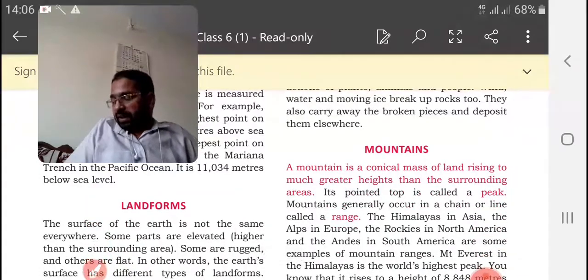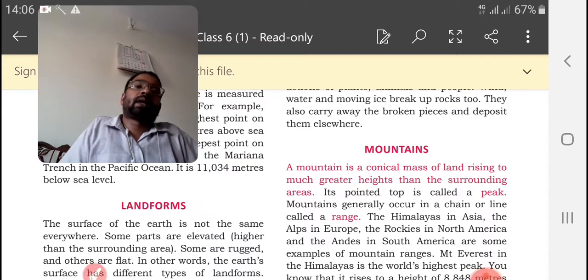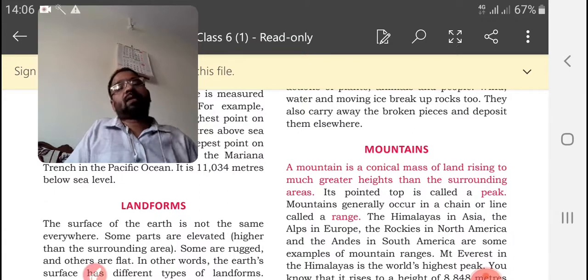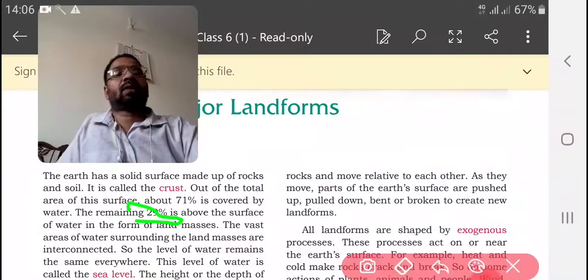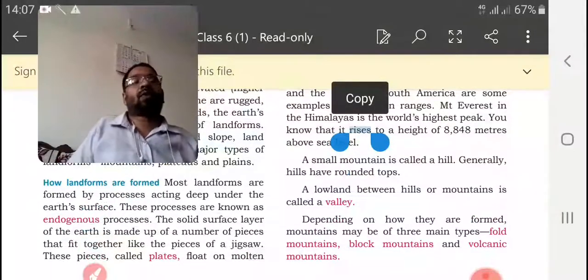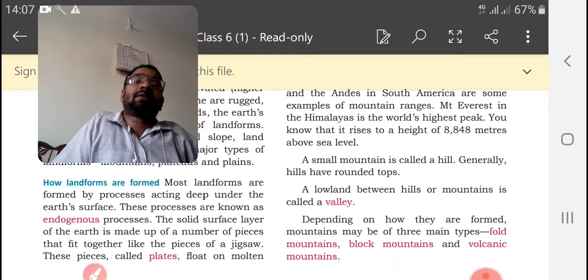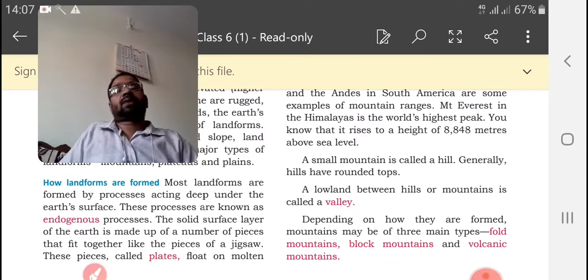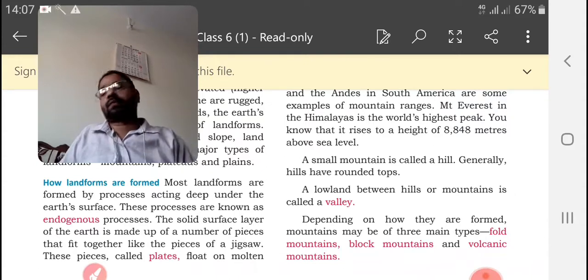Then landforms. The surface of the earth is not the same everywhere. Some parts are elevated higher than the surrounding area. Some of the parts are elevated from the surrounding area, this 29 percentage are known as landforms. How landforms are formed? Most landforms are formed by the process acting deep under the earth's surface. These processes are known as endogenous process. The action which takes place under the earth is known as endogenous process. Because of this the landforms are getting formed.